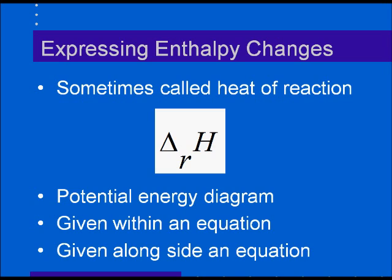There are three ways that we can indicate an enthalpy change for a given process. We can write out a potential energy diagram, which we indicated in the previous lecture. We can take an enthalpy change and write it inside as a term in an equation. And we can write an enthalpy change as a quantity alongside an equation. So let's look at what I mean.